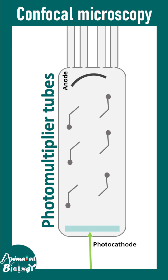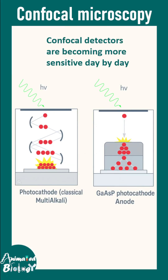In confocal microscopy, photomultiplier tubes (PMTs) are used as detectors. The PMT has a photocathode where photons from the specimen strike, leading to the emission of photoelectrons. These photoelectrons travel through an array of electrodes called dynodes, each more positive than the previous one, leading to amplification of even faint signals.